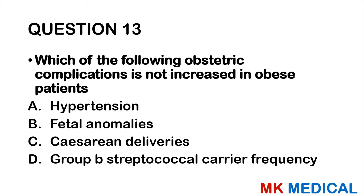Question 25: About shoulder dystocia, choose the most correct option. A — more common in primigravida. B — fundal pressure has a role in management. C — can occur in babies less than 3 kg. D — McRoberts maneuver involves exaggerated extension of maternal hips. While shoulder dystocia is more common with large babies, it can occur in babies under 3 kg. Never apply fundal pressure in shoulder dystocia, and do not pull on the cord. The answer is C.